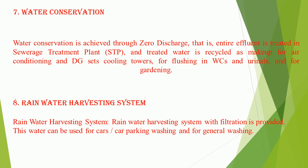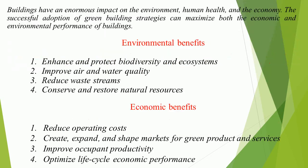Feature 8: Rainwater Harvesting System — a rainwater harvesting system with filtration is provided. This water can be used for car/car parking washing and for general washing. Buildings have an enormous impact on the environment, human health, and the economy.